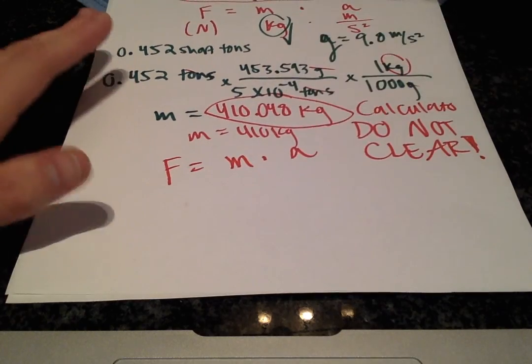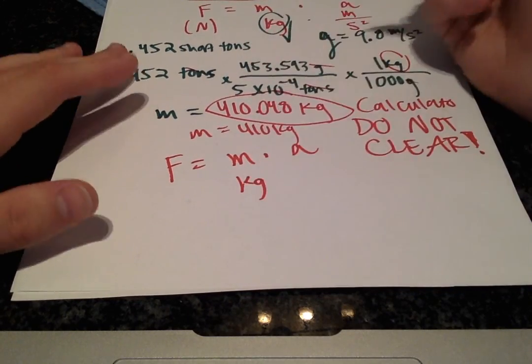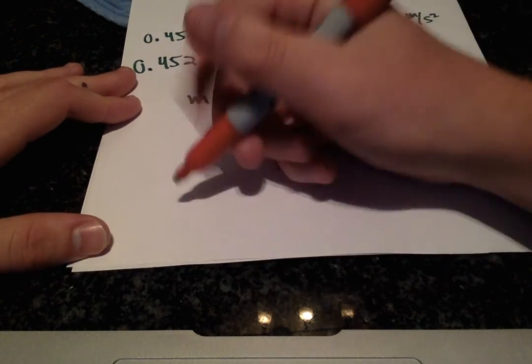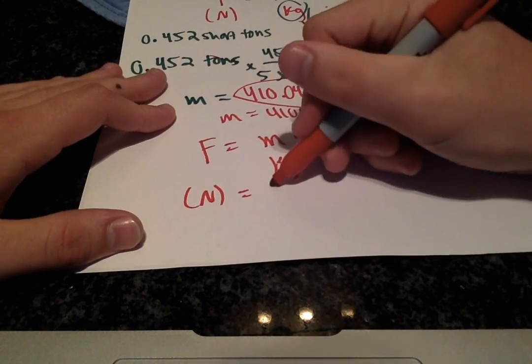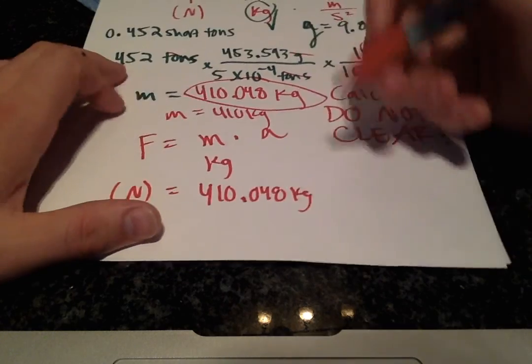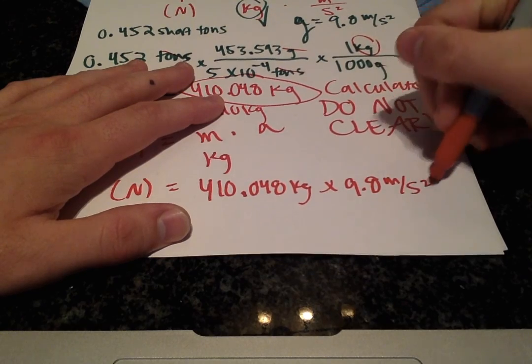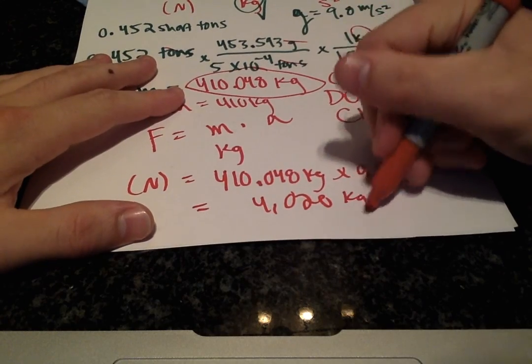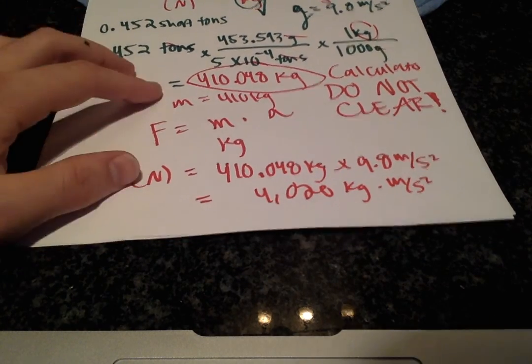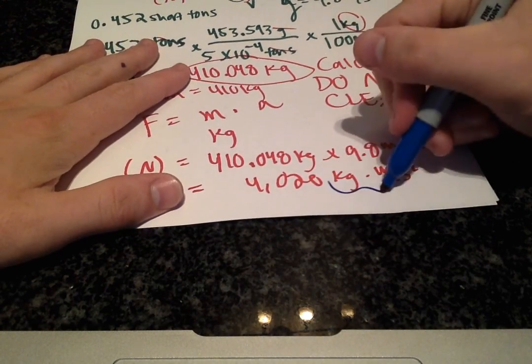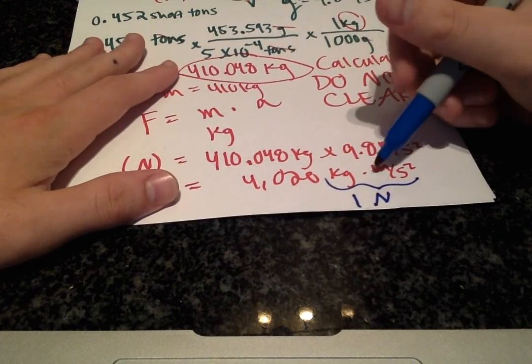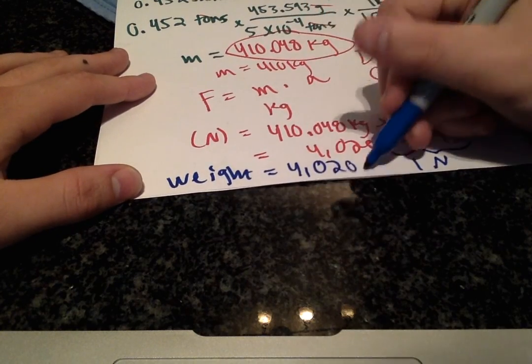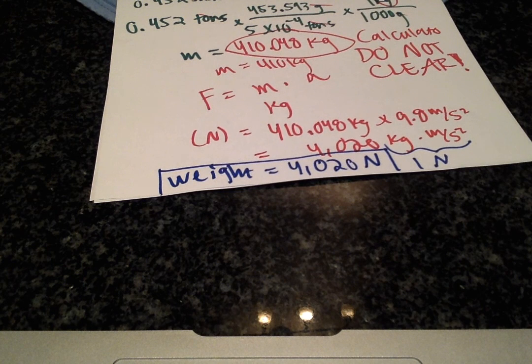So force equals mass times acceleration. And we have mass in kilograms, which we wanted. And the acceleration due to gravity is just 9.8 meters per second squared. So we can get our force or our weight in newtons. That's going to be the mass we just got, 410.048 kilograms times 9.8 meters per second squared. And then we get our result as 4,020 kilograms times meters per second squared. And one thing I do want to point out is that it is pretty common knowledge that 1 newton is equal to 1 kilogram multiplied by meters per second squared. So we have our weight is equal to 4,020 newtons if we're rounding to three significant figures.